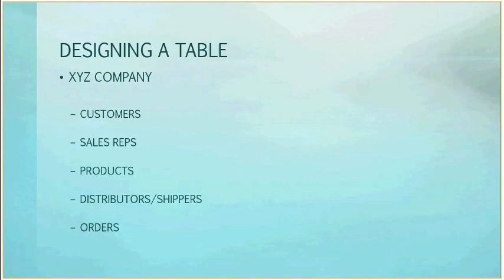The more you break down your categories, the better it is. Sometimes you can get away with just one table if you have a limited amount of information. But if you have lots of data, there is a limit in a table of 255 fields. So you have to break it down. I'm going to create a customer table, sales rep table, and so on.